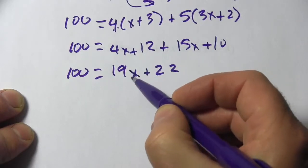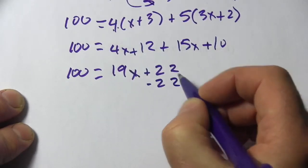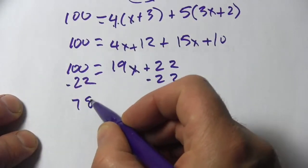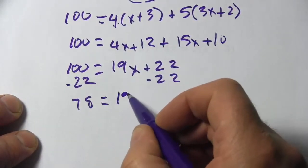Now, the next step is to get the x term alone. So I'm going to subtract 22 from both sides. So that's going to give us 78 over here and 19x over here.